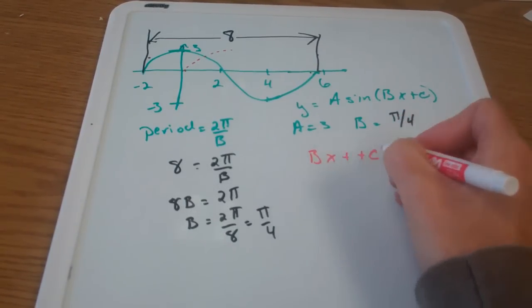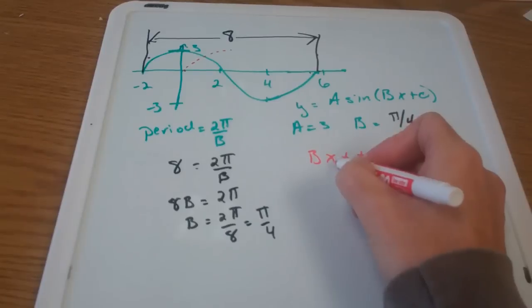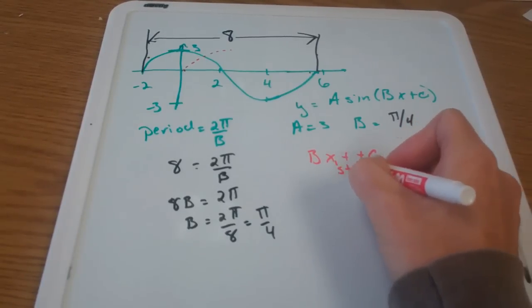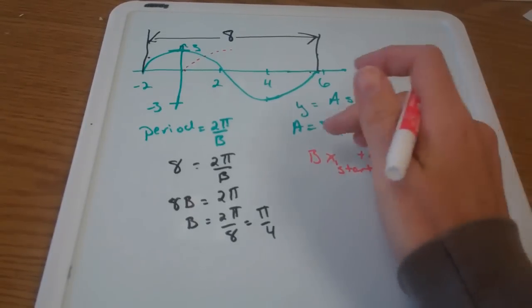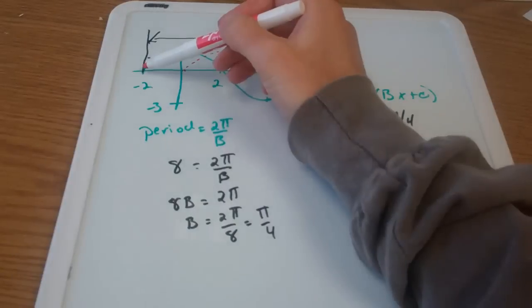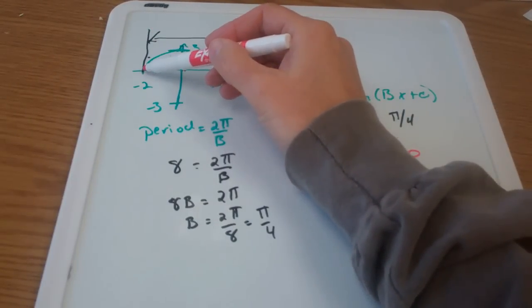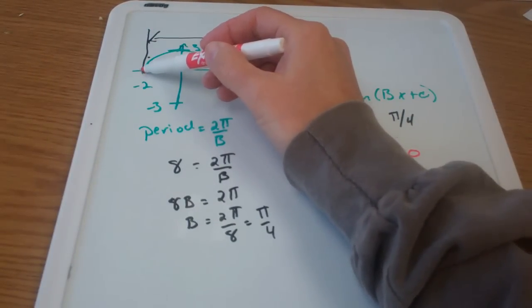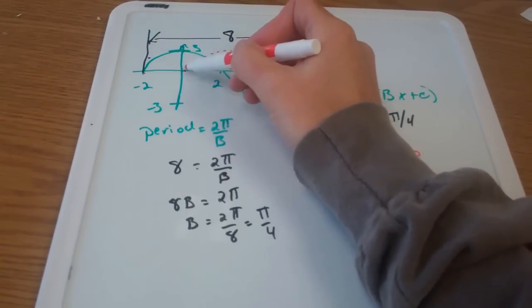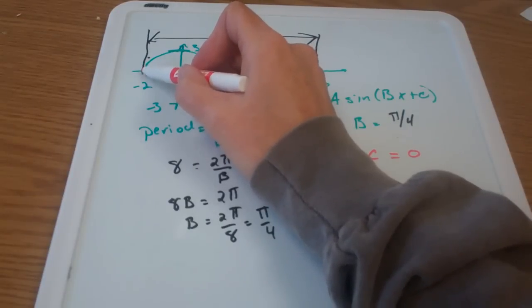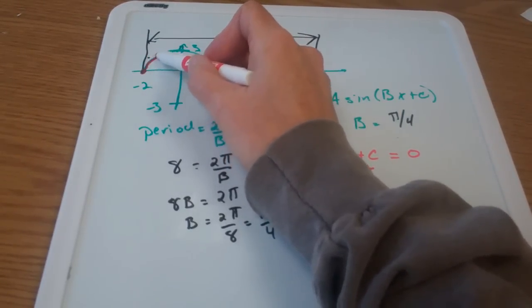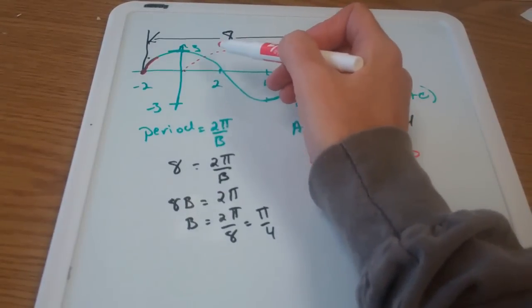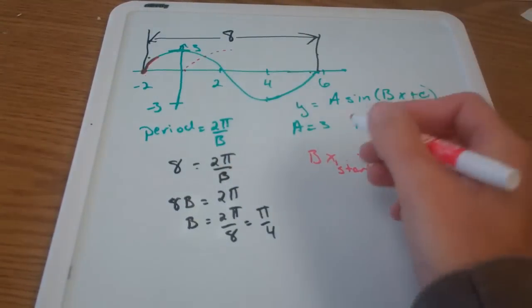I know what b is. I don't know what c is. And I want you to think of x here as my start. So x start is where the sine curve normally starts. It starts on the x-axis and then goes up from there. So what I want to know is this x right here, that's where the sine curve is starting. And so my x start is negative two.